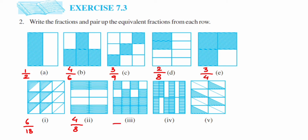The next figure has 16 equal squares, out of which 12 are shaded, giving 12 upon 16. The next one has 12 equal parts; counting the shaded ones — 1, 2, 3, 4, 5, 6, 7, 8 — so that's 8 upon 12.